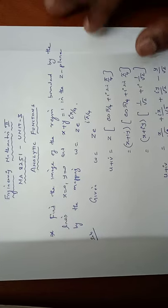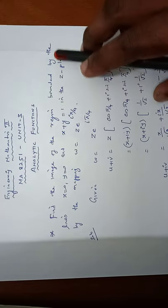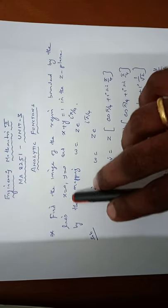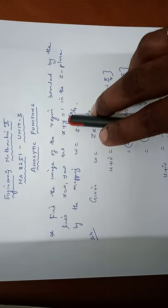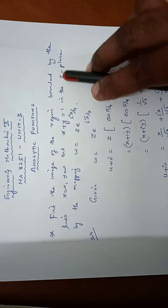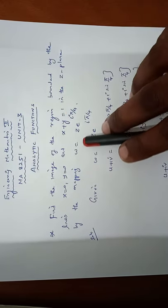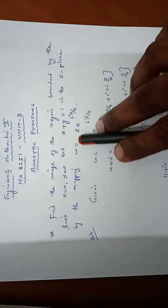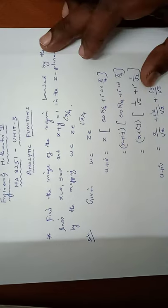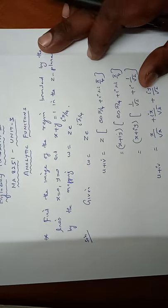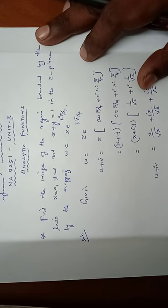Find the image of the region bounded by the lines x equal to 0, y equal to 0, and x plus y equal to 1 in the z-plane under the mapping w equal to z times e to the power i pi by 4.